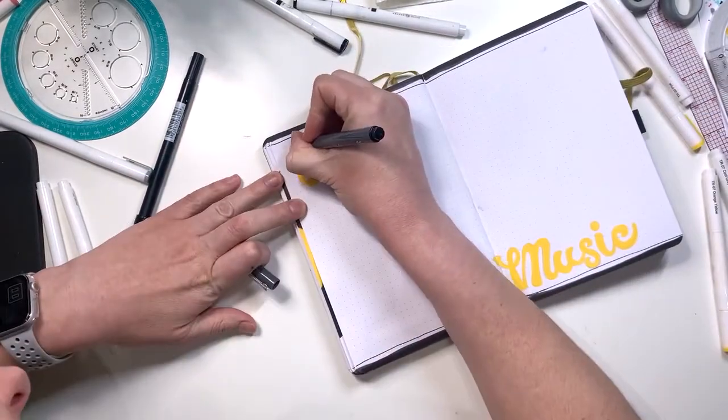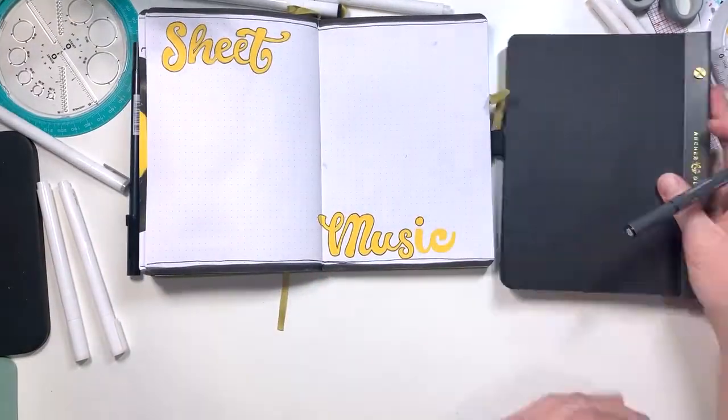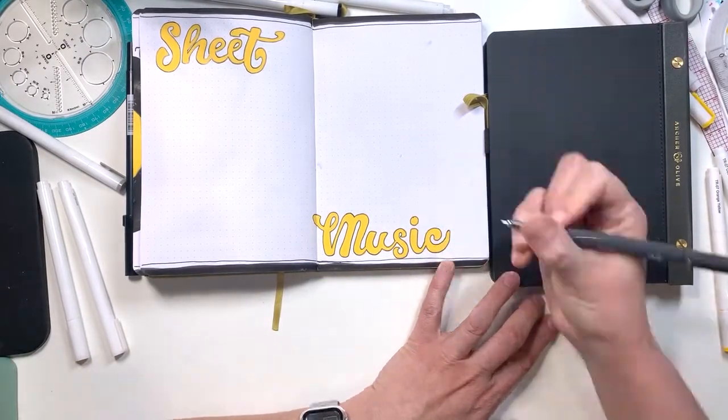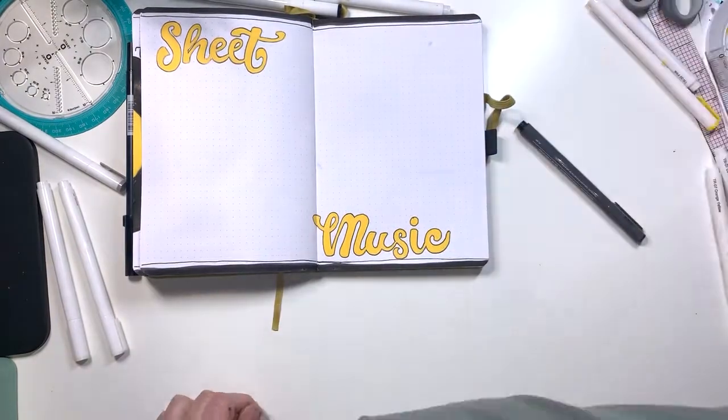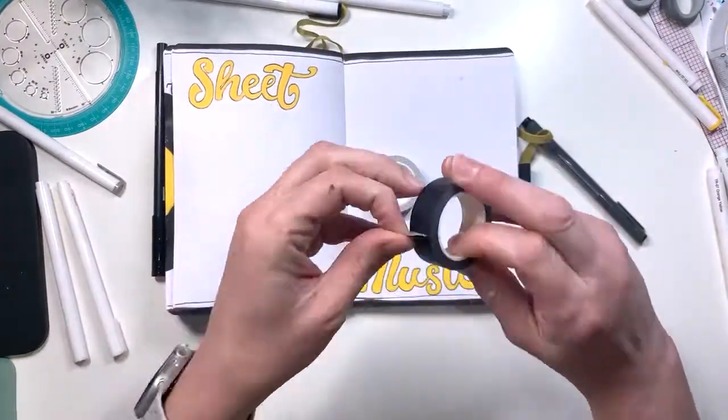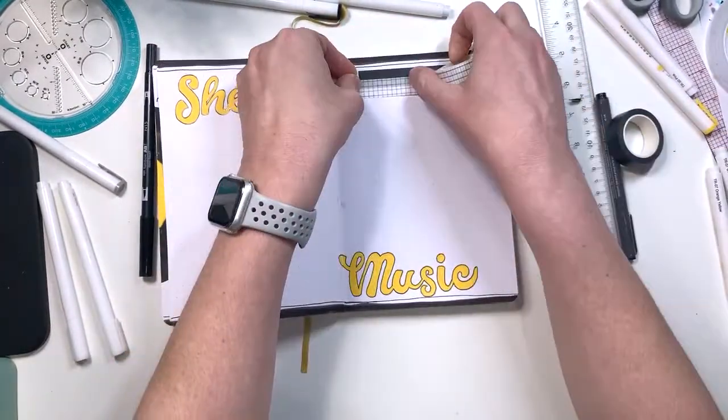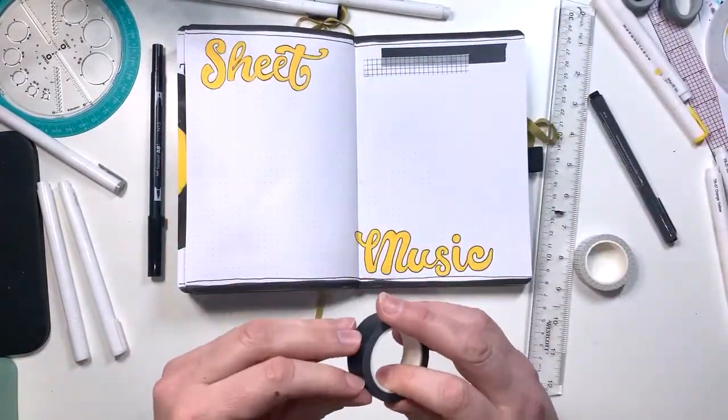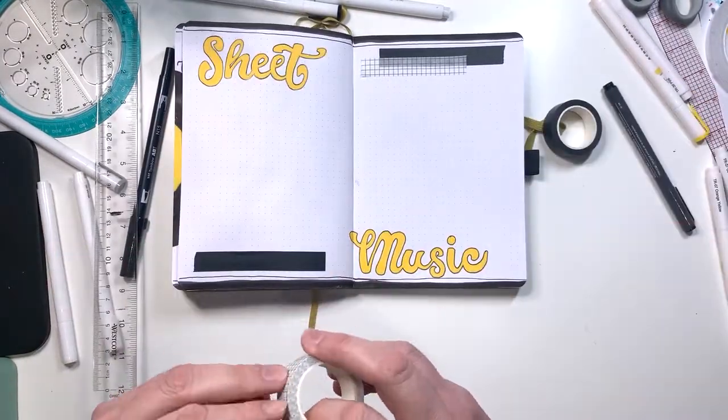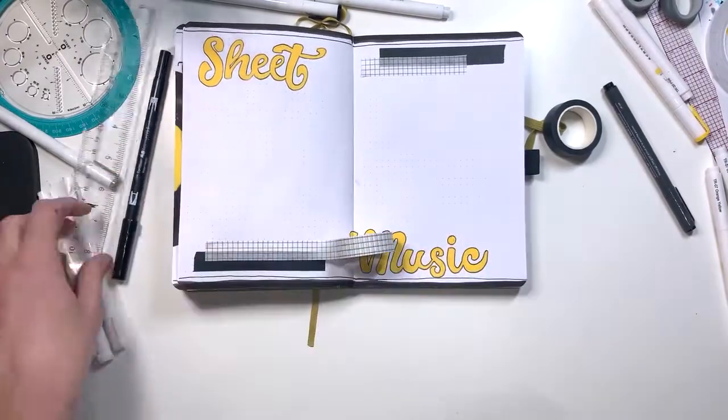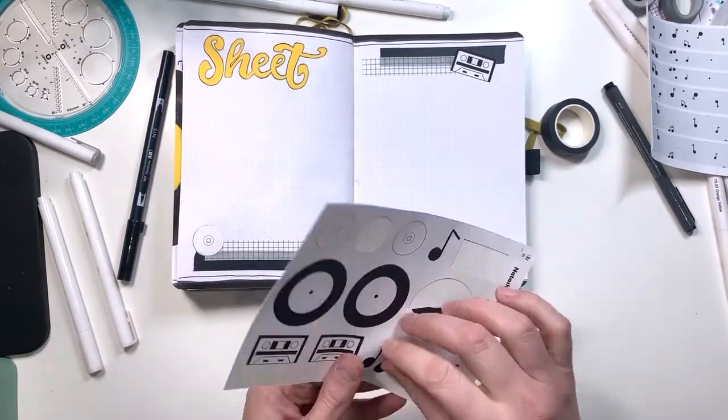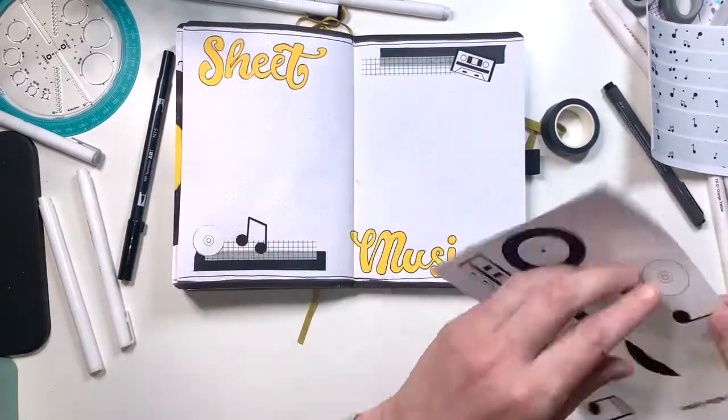I also go in and outline the words just because I think it makes it look more crisp and clean. Here is where I grab my washi tape. Again, I sell this washi tape in my shop in a set of four—they come in black, gray, and caramel. That is a cassette tape and a CD, and then I'm just going to go in and color them in.